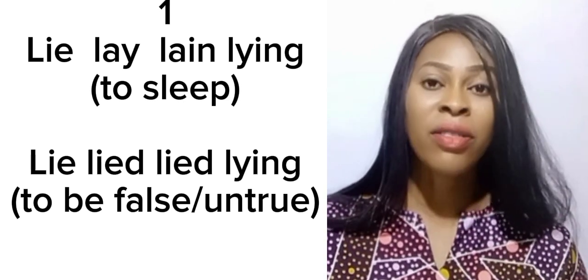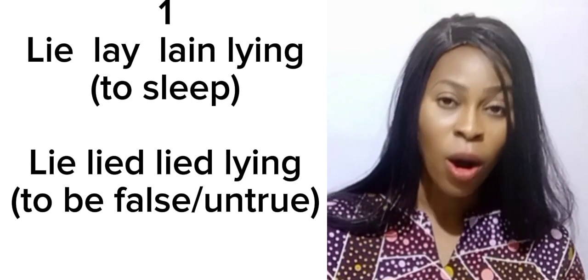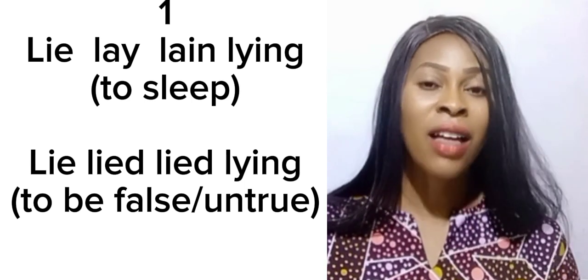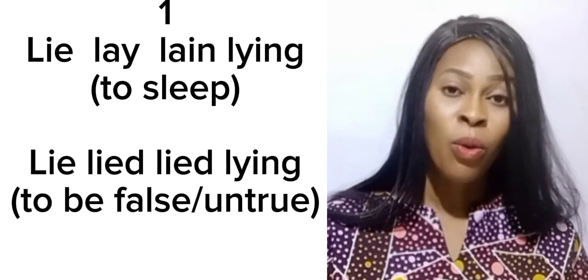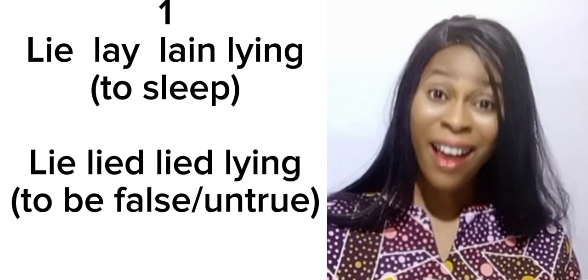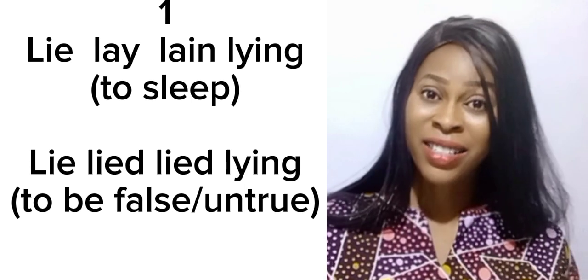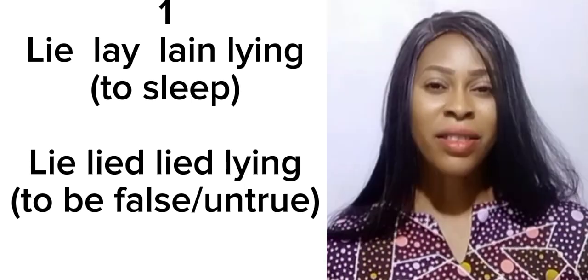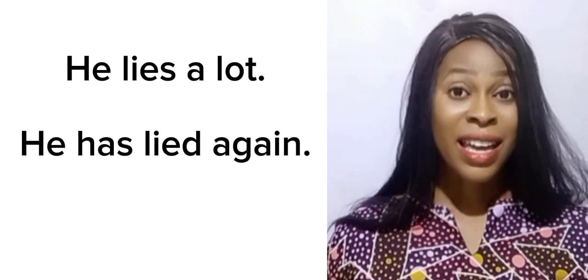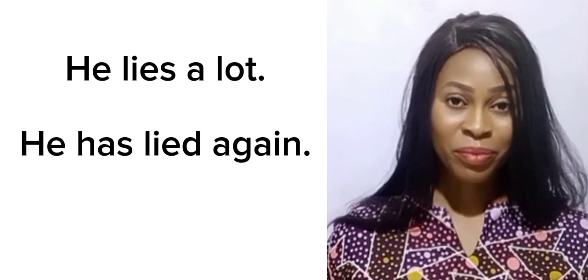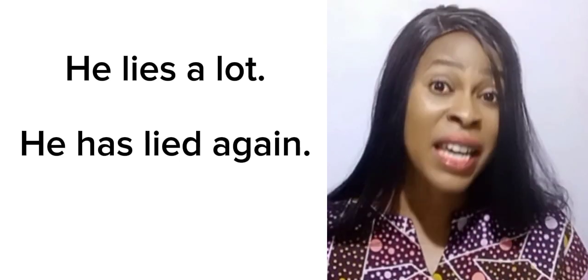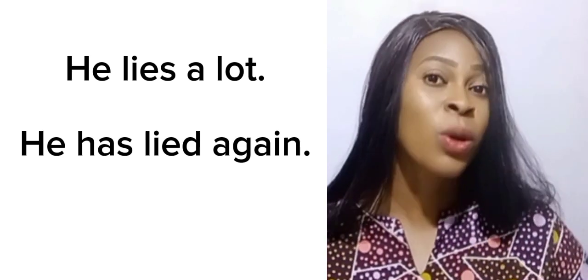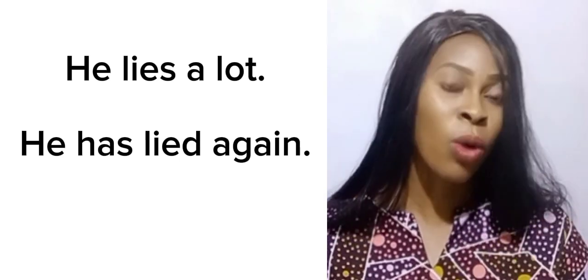When looking at the present progressive form, we have L-Y-I-N-G, that is 'lying.' For example: 'Why are you lying?' or 'I am lying down.' Look at these examples: 'It lies a lot' and 'It has lied again.' Now observe that the context of situation determines the meaning you are trying to pass, or what you want your listener to decode.